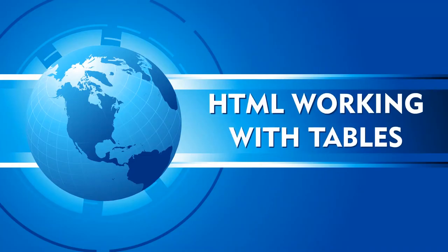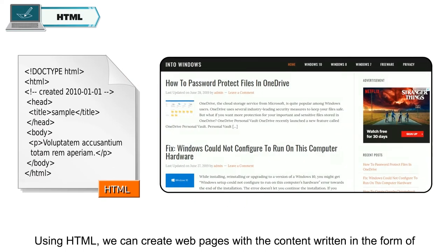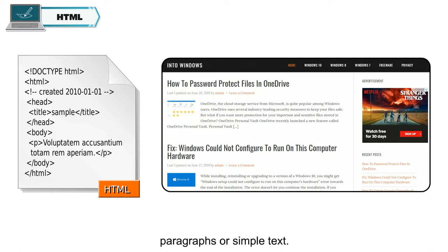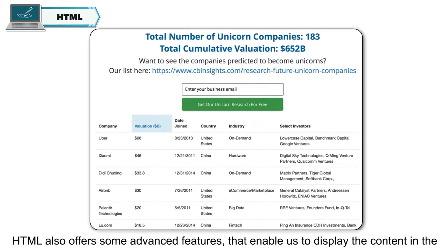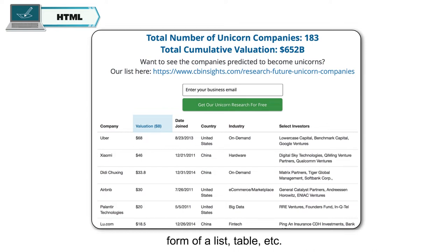HTML: Working with tables. Using HTML, we can create web pages with content written in the form of paragraphs or simple text. HTML also offers some advanced features that enable us to display content in the form of a list, table, etc.